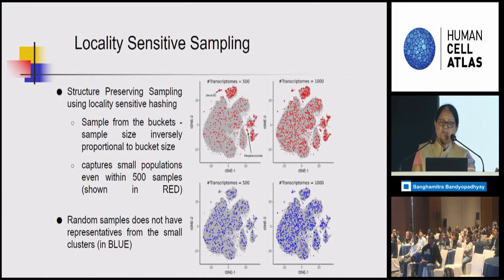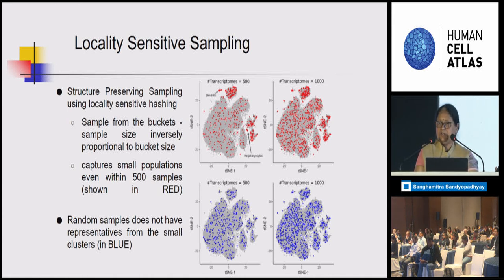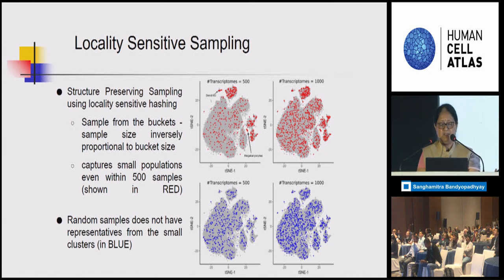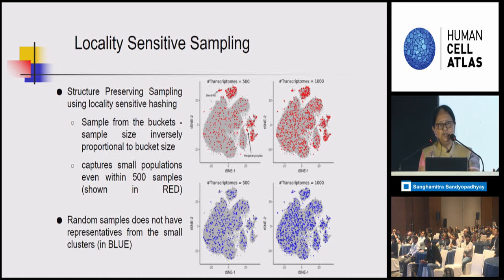We use LSH-based sampling: we sample cells using this hashing function so that the structure gets preserved. As you can see, using locality-sensitive hashing, we are able to still retain very small groups of data — that was the most important part of this algorithm. With random sampling, small clusters tend to get lost. We sample from the different buckets produced by hashing, with sampling inversely proportional to bucket size: if there are only a few points, we try to retain as many as possible, but if the bucket contains many points, we downsample heavily.